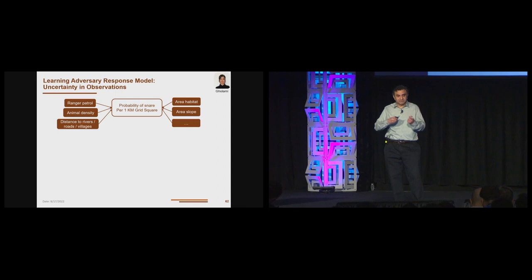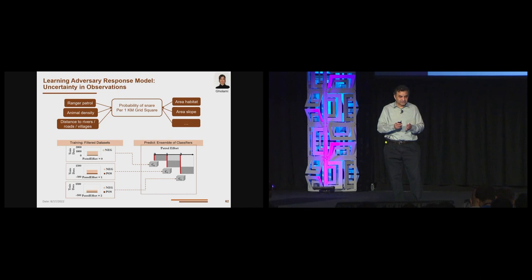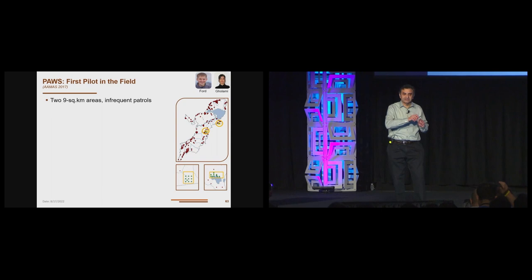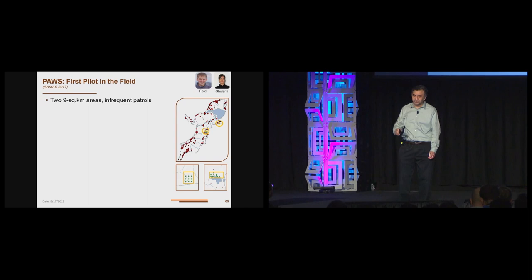So we got 14 years of data from Uganda. And this includes for each grid square, ranger patrol frequency, animal density, distance to rivers, roads, and villages, whether there was a snare in that grid or not. And based on that, the question was, can we predict the probability of a snare being there per one kilometer grid square? There's an ensemble model that we built. I'm going to skip over that in the interest of time. So we did lots of tests in the lab, but our colleagues and collaborators in Wildlife Conservation Society were not convinced. They wanted a field test in the real world. And their condition was that the field test must predict new locations where snares have not been found.